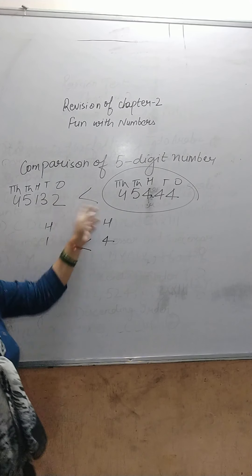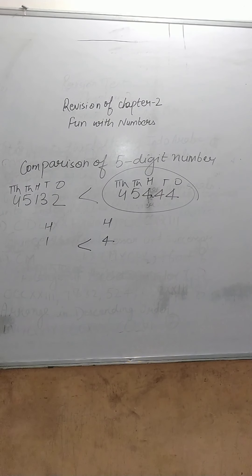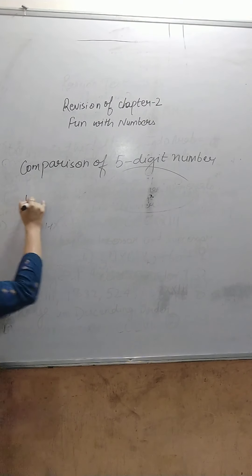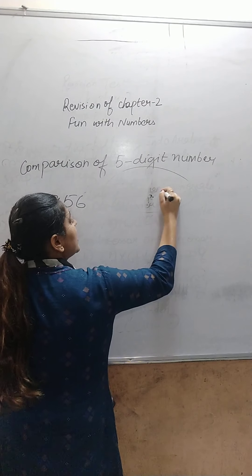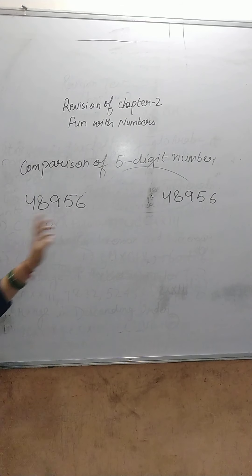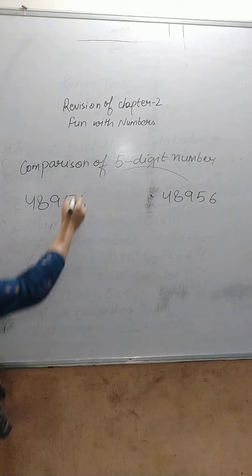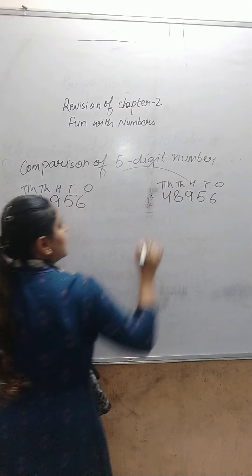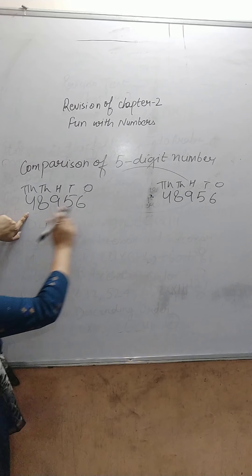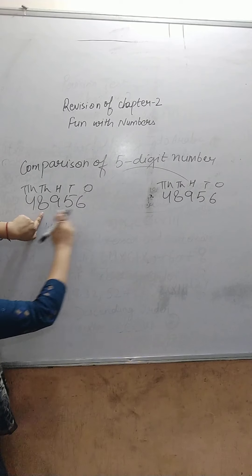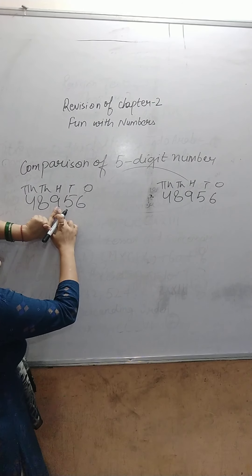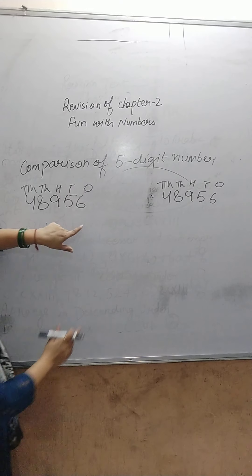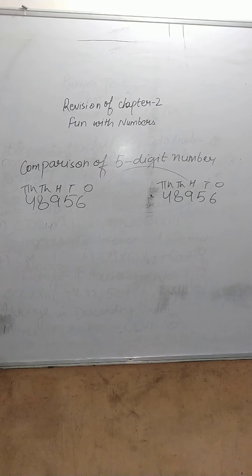Let's take one more example. Here is the number 48,956 and the next number is also 48,956. Compare both numbers: the 10,000 place has 4 and 4 — same. The 1,000 place has 8 and 8 — same. The 100's place has 9 and 9 — same. The 10's place has 5 and 5 — same. The 1's place has 6 and 6 — same. Both numbers are equal.